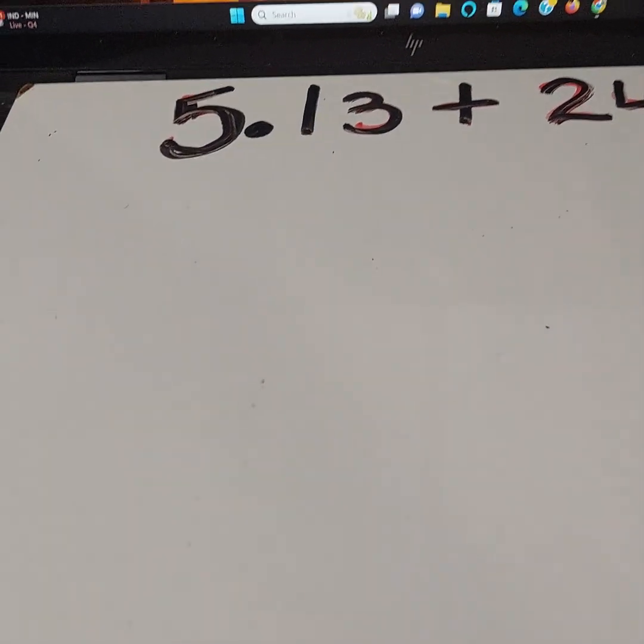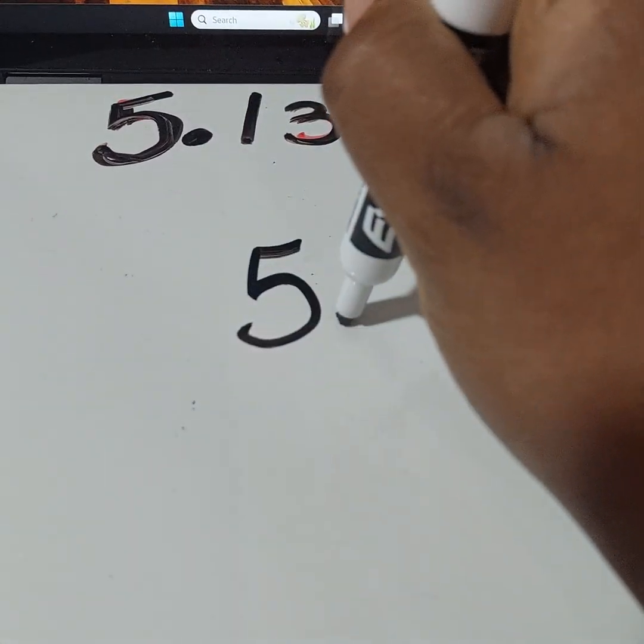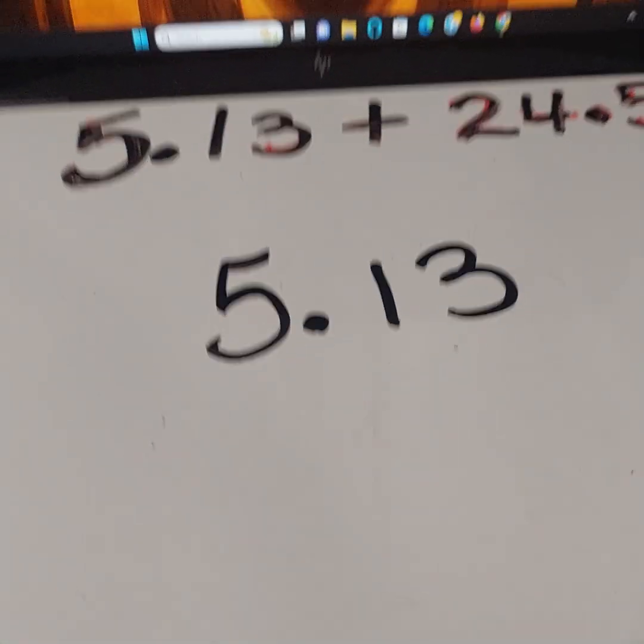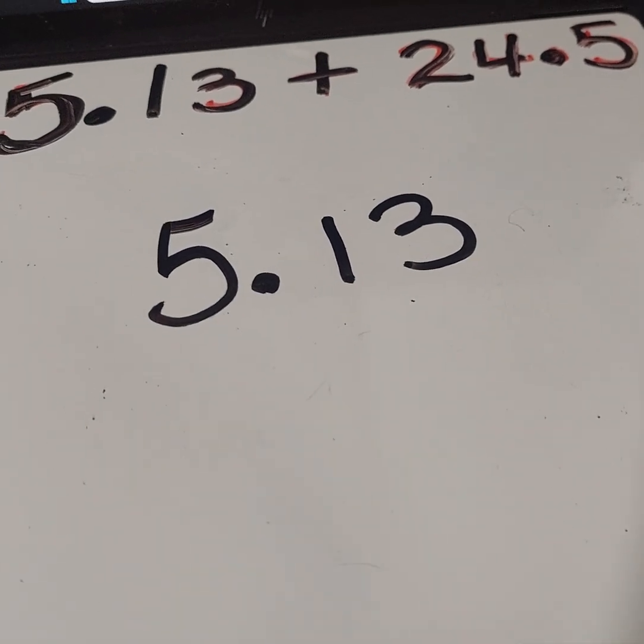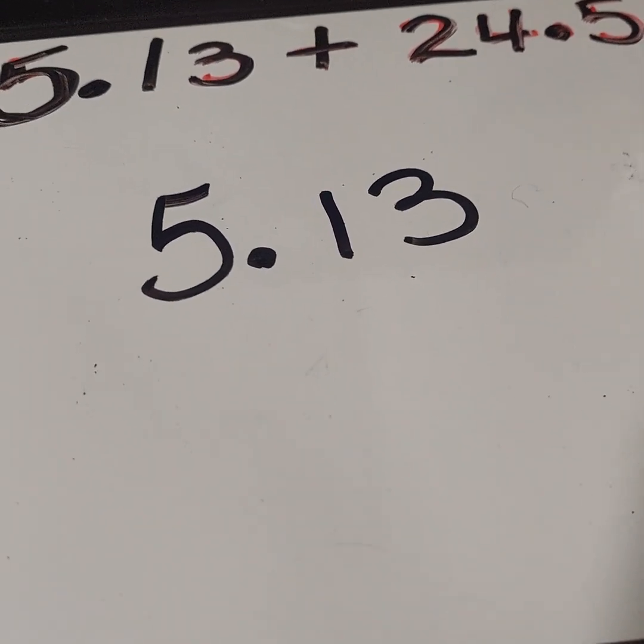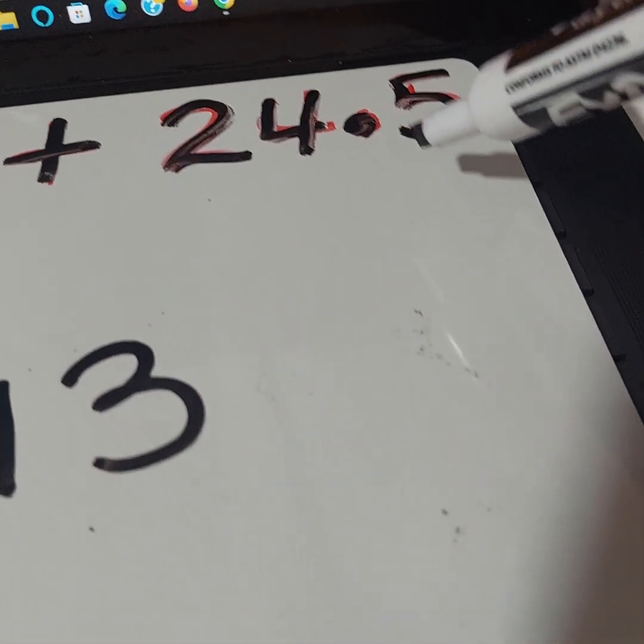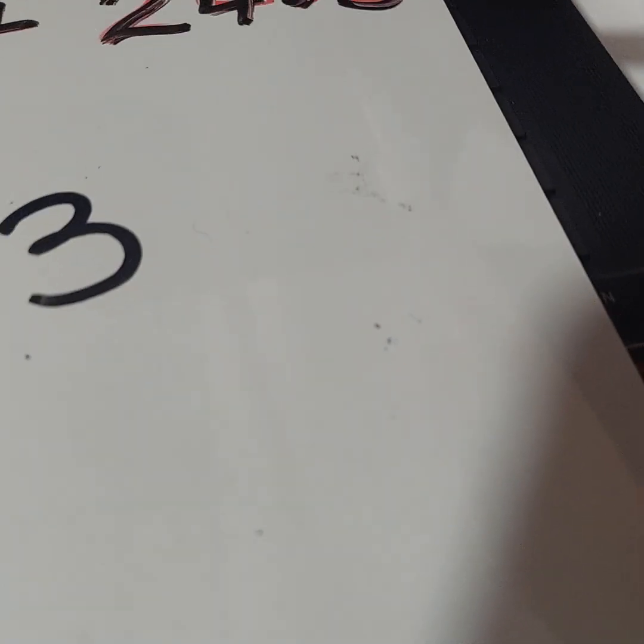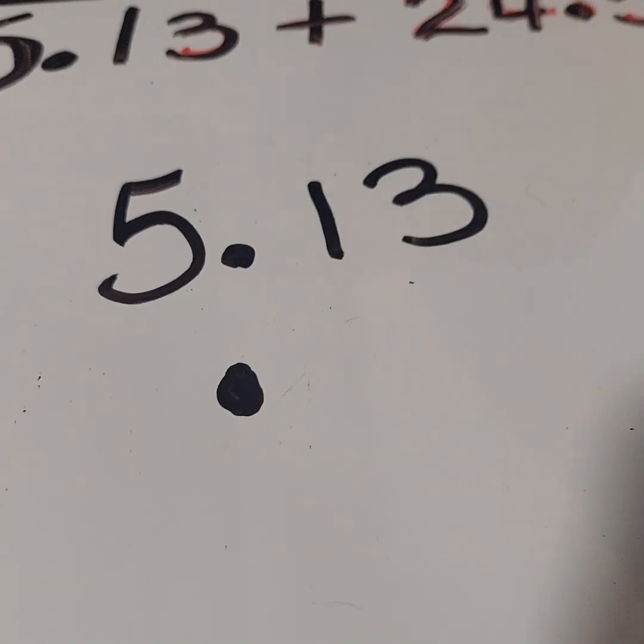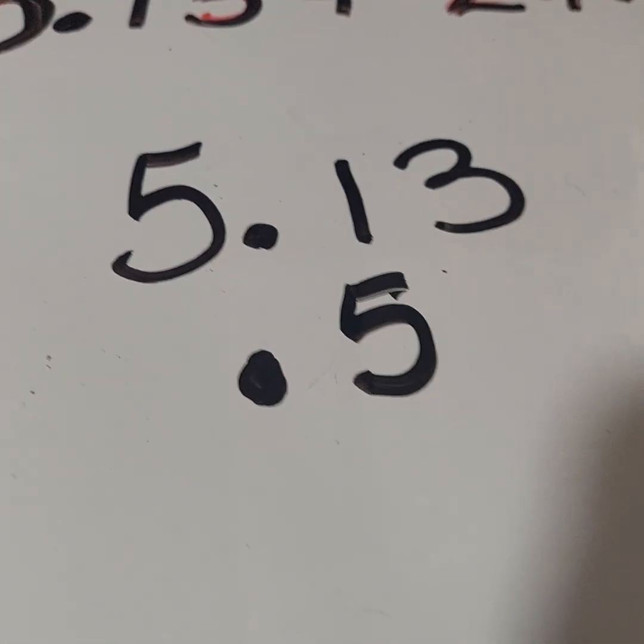First I'm going to write the problem over, so I'm going to write 5.13. Now this is where the trick comes in - place your decimal point for the next number. If you notice on this particular number, the number right adjacent to the decimal point is a five. That means five must also be adjacent to the decimal point, so place it right here.